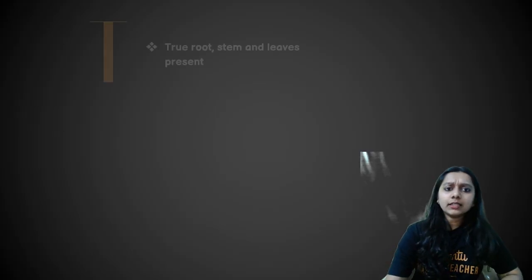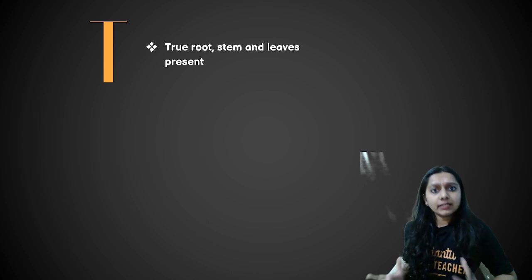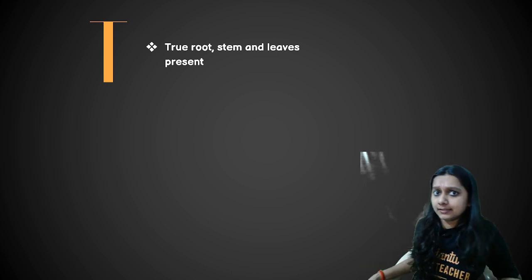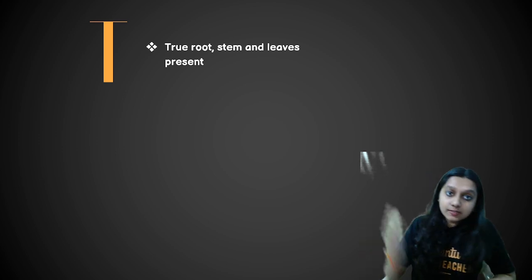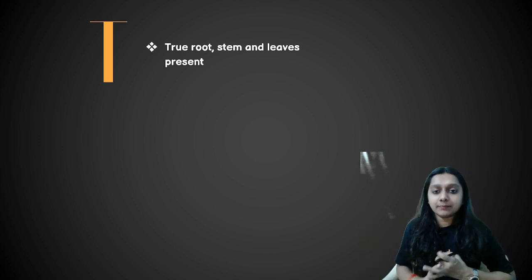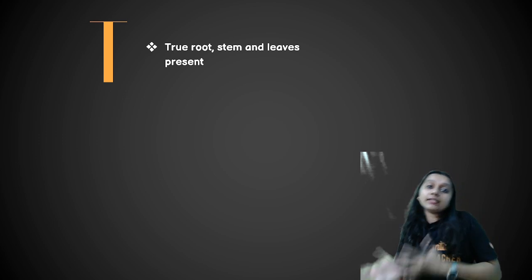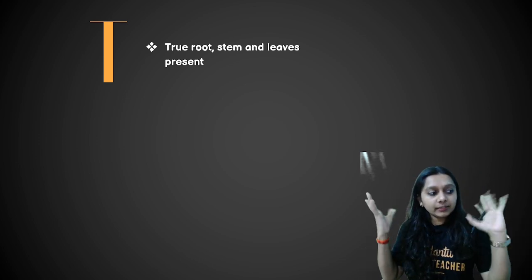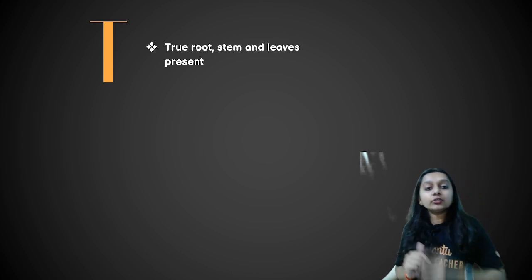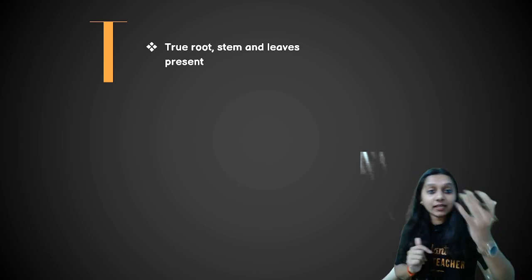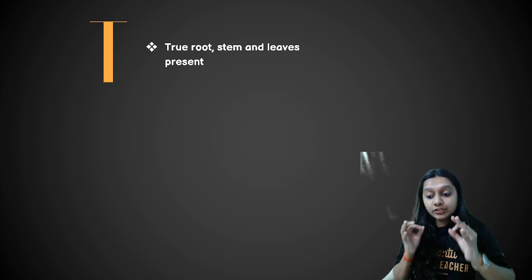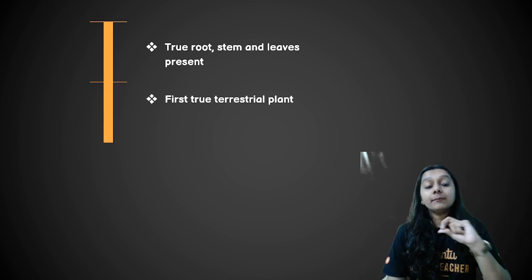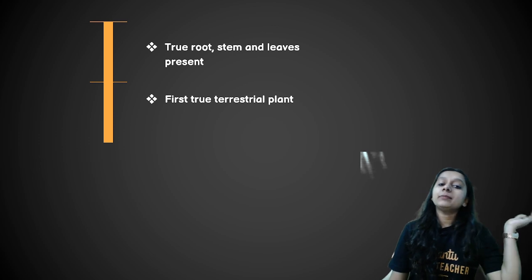The key feature of Pteridophyta is that it is the first plant on Earth to have true root, true stem, and true leaves. Algae have no root, stem, or leaf. Bryophytes have root-like, stem-like, and leaf-like structures. But Pteridophyta has original, true root, stem, and leaf present anatomically — you can see their anatomy distinctly.